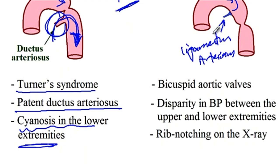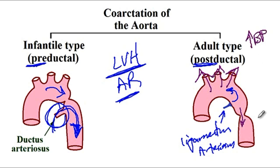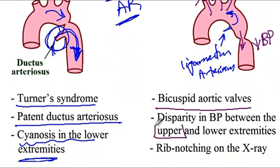The adult type is associated with the bicuspid aortic valve, and there is also a disparity in blood pressure between the upper and lower extremities. Unlike the infantile type, where blood is shunted from the patent ductus arteriosus, in the adult type there is no patent ductus arteriosus. There is a problem with blood flow from the aortic arch into the descending aorta, so most blood goes to the upper extremities, resulting in high blood pressure in the upper extremities but low blood pressure and weak femoral pulses in the lower extremities.